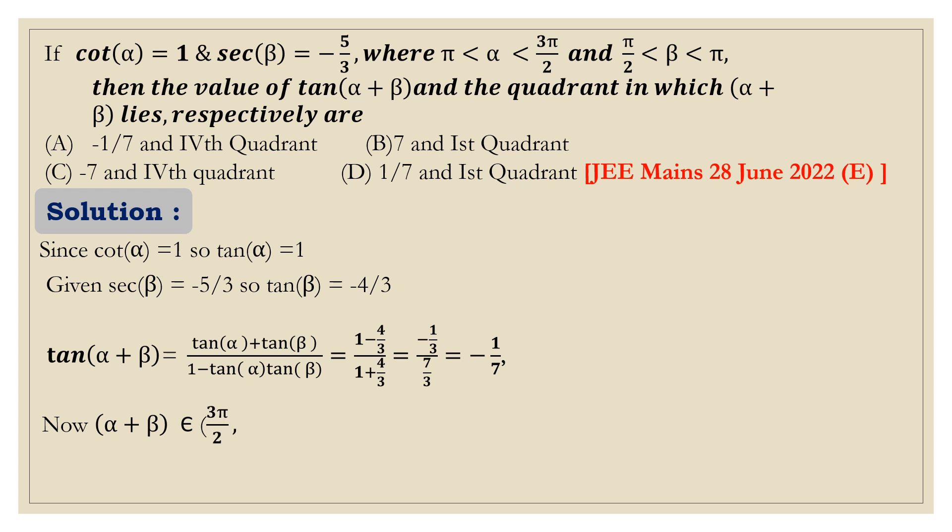Now, α plus β must lie between 3π by 2 to 2π, that is in fourth quadrant. So the correct option is option A.